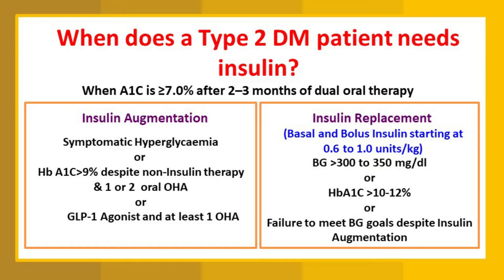In insulin augmentation, the patient has symptomatic hyperglycemia and his HbA1c level is more than 9% even after two to three oral hypoglycemic agents or GLP-1 agonists like liraglutide or exenatide. Even after taking all these drugs, if HbA1c remains above 9%, we can start insulin in such patients.